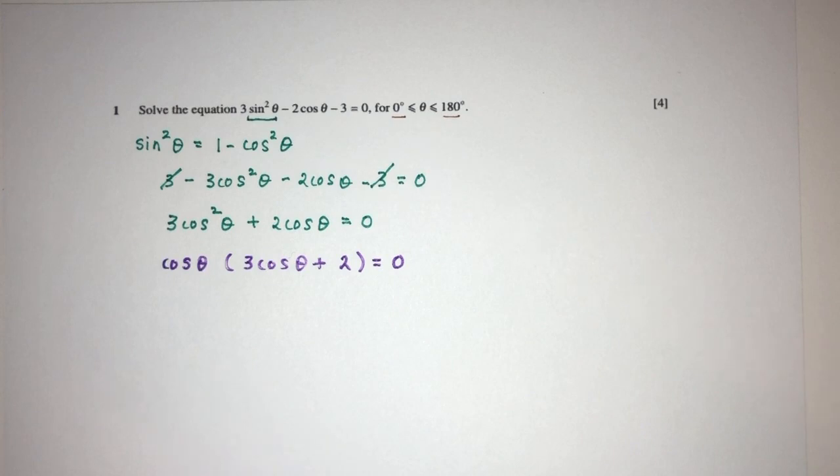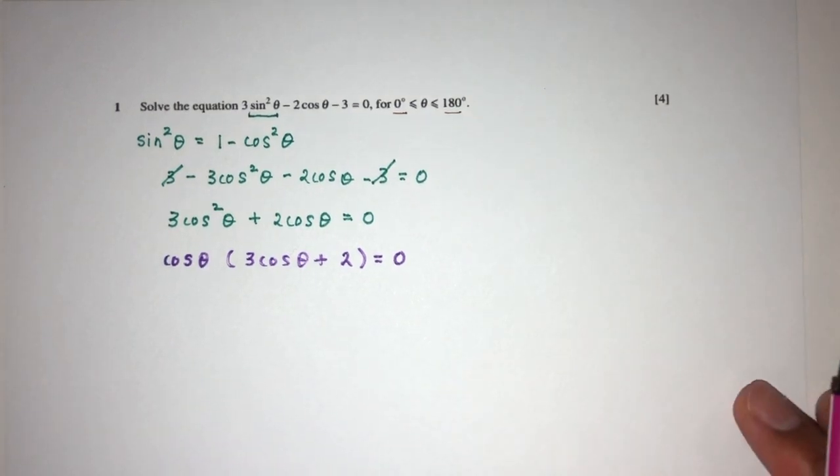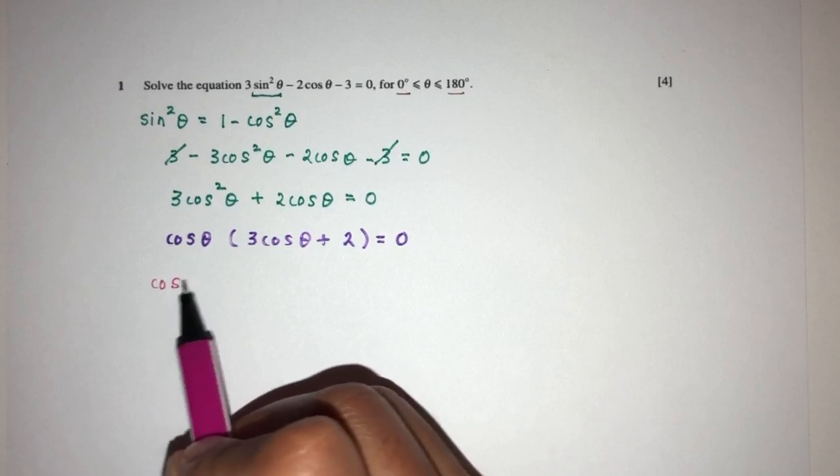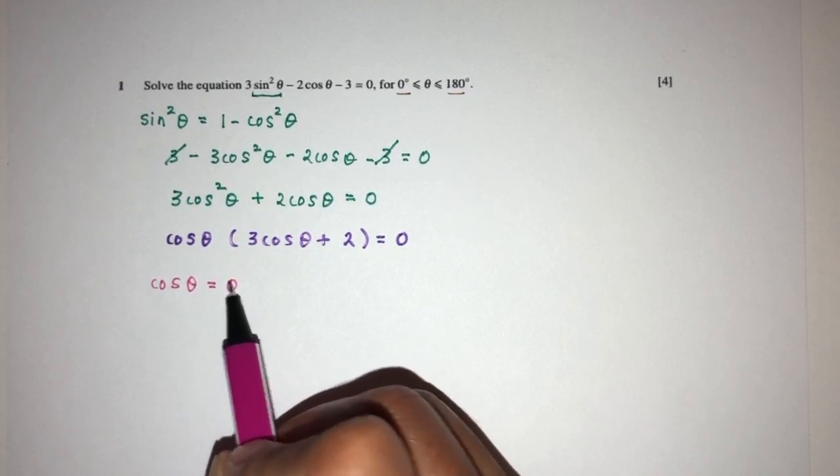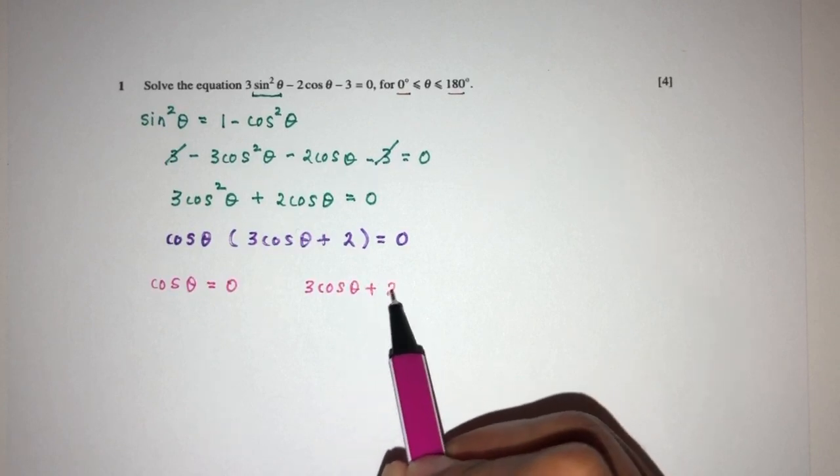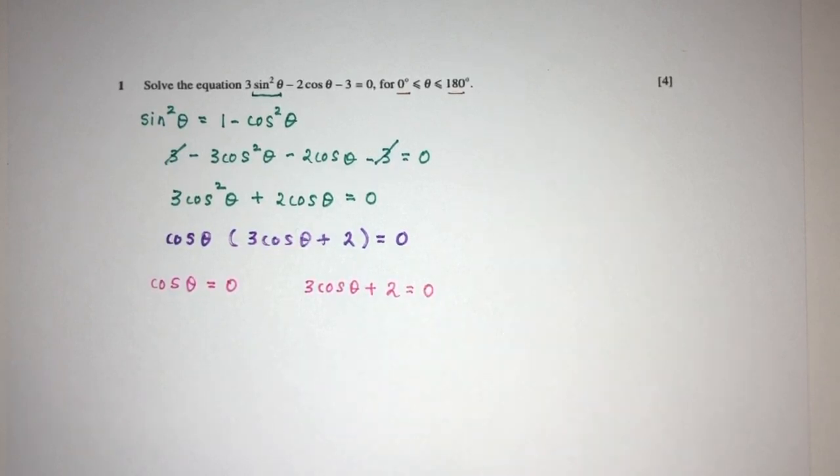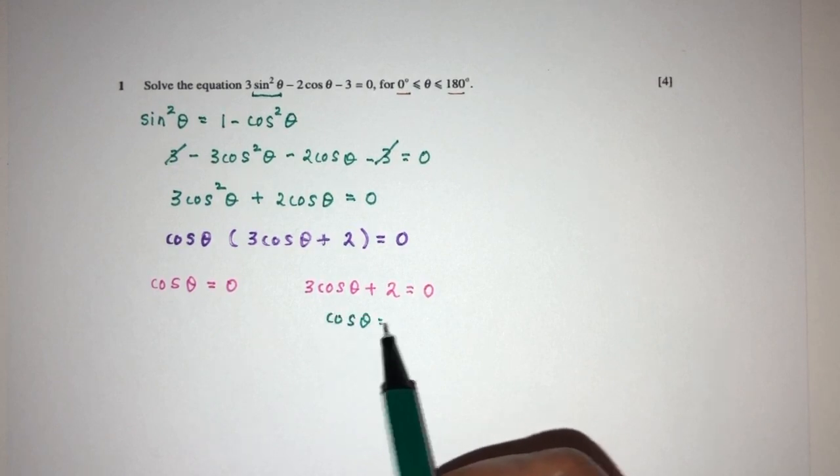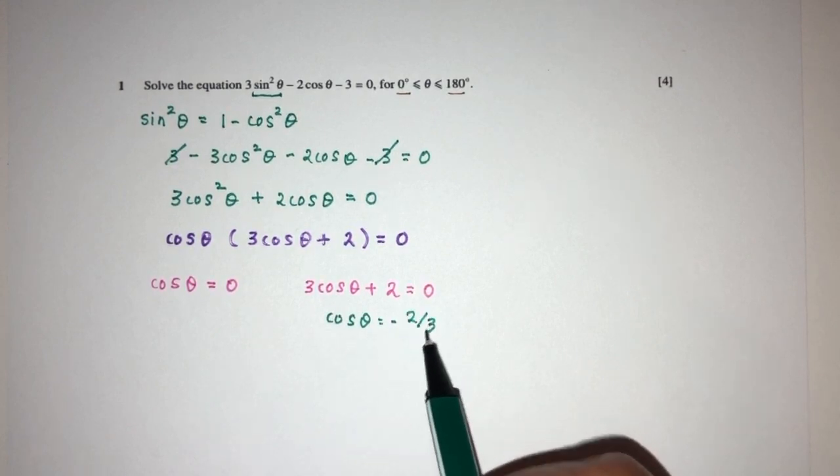Right, now after factorization, obviously we can just solve to find the value of theta. The first value will be cos theta is equal to 0, and then we can have 3 cos theta plus 2 is equal to 0. Now for this one, that will be cos theta is equal to minus 2 over 3.